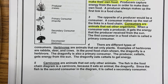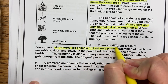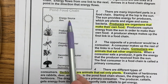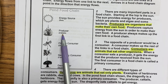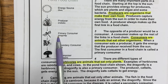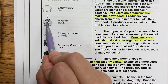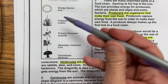Paragraph four: There are different types of consumers. Herbivores are animals that eat only plants. Examples of herbivores are rabbits, deer, and cows. In the pond food chain shown, the dragonfly is an herbivore. The dragonfly is also a primary consumer. The producer, cattails, gets energy from the sun. The dragonfly eats cattails to get energy. So I'm going to highlight: herbivores are animals that eat only plants. They're also referencing this diagram right here. The sun is the primary energy source — it gives energy to producers, which in this case is a plant called cattails. Our primary consumer, our herbivore, is the dragonfly, and he's going to eat the cattails. Notice that the energy is flowing from the sun into the plant and from the plant into the dragonfly. So the arrows follow the energy.